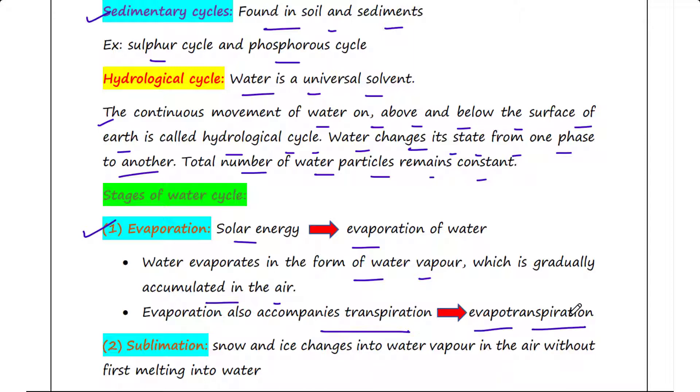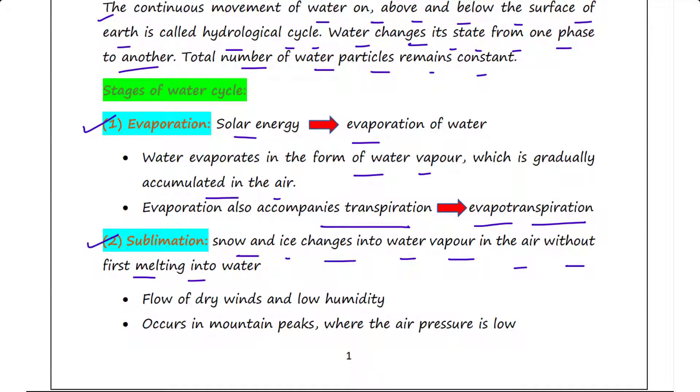Next is sublimation. Sublimation is the process of snow and ice changing into water vapor in the air without first melting into water. It occurs due to the flow of dry winds and low humidity. Sublimation readily occurs in mountain peaks where the air pressure is low. The sublimation process is increased by lower air pressure since less energy is required.